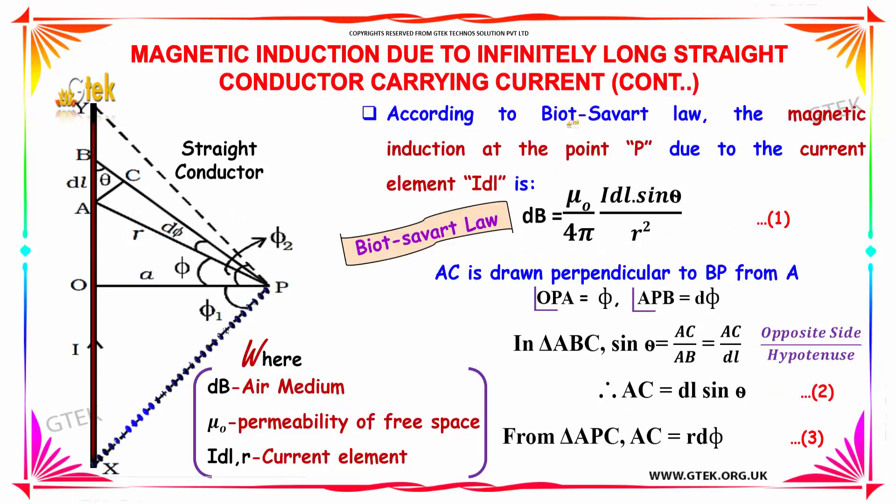According to the Biot-Savart law, the magnetic induction at point P due to the current element Idl is: dB equals mu0 into 4pi into I into dl sin theta by r square.